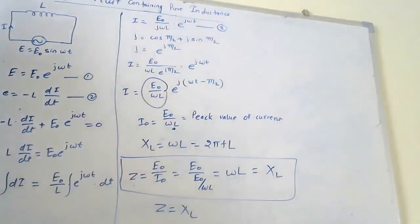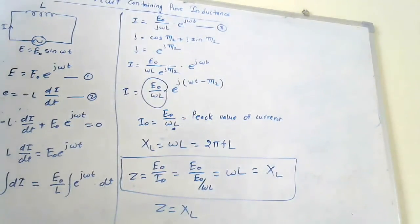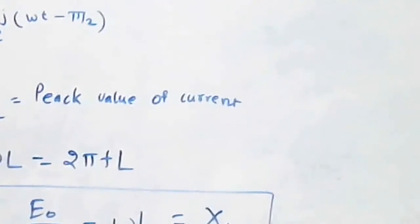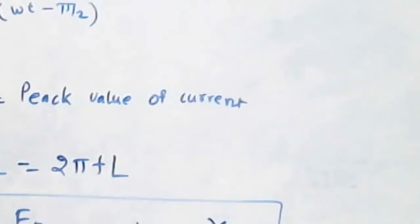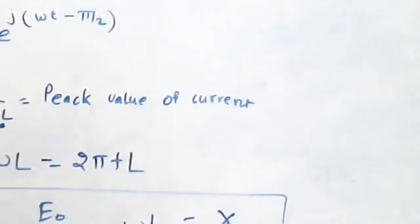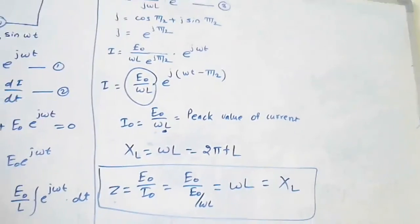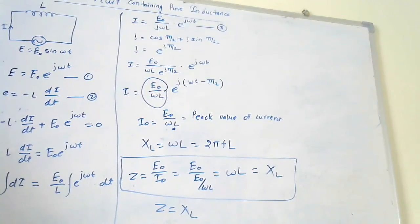This is the inductive reactance of the inductance. When the pure capacitance of a capacitor is connected across the applied alternating EMF, that E equals E0 sin(ωt).